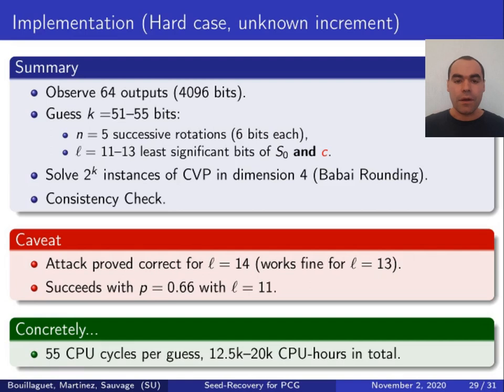So concretely, doing all that takes 55 CPU cycles per guess. And so this means that the running time of the attack is estimated between 12,000 and 20,000 CPU hours.